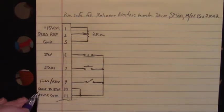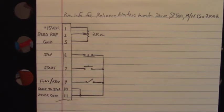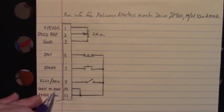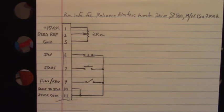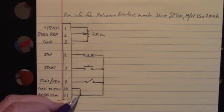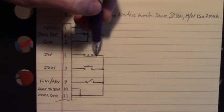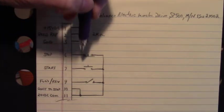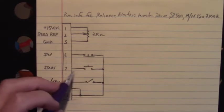On pin 10 we have a close to stop input. Now the datasheet, and you can look this up on the internet, all you have to do is type in Reliance Electric SP500 and you'll get a PDF manual on this drive. It states that you can use this terminal 10 as an e-stop input or a motor thermal input. And I just jumped it out 10 to 11. So, the stop input is a normally closed switch that we open when we want to stop. The start input is a normally open switch that we close when we want to run.